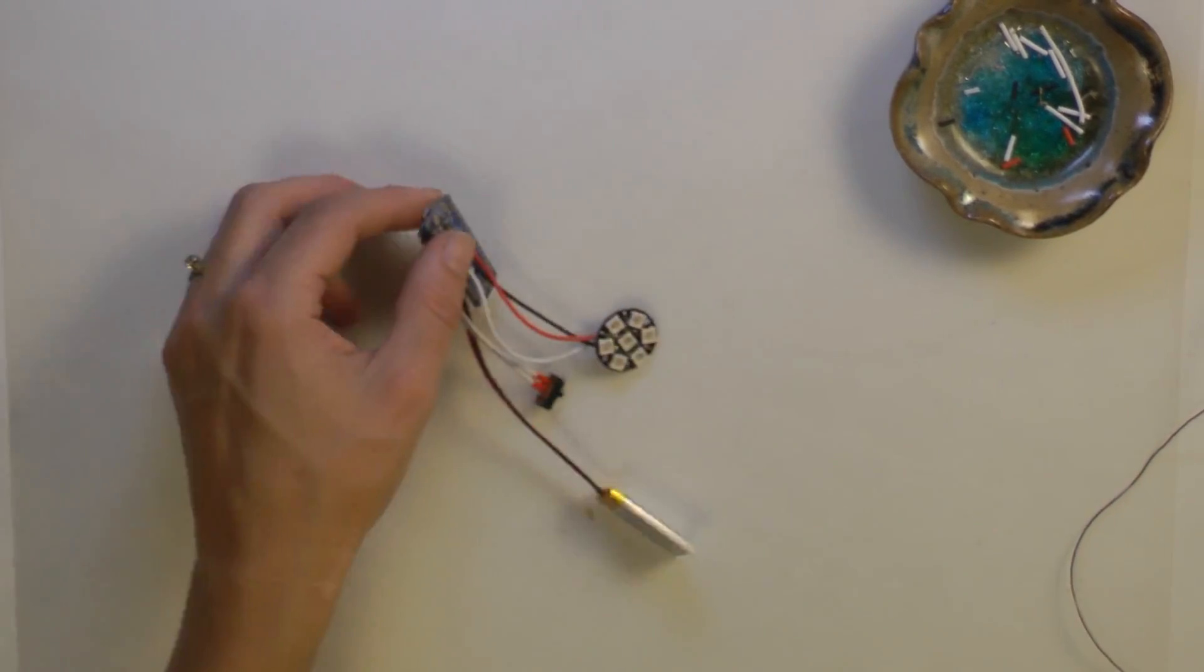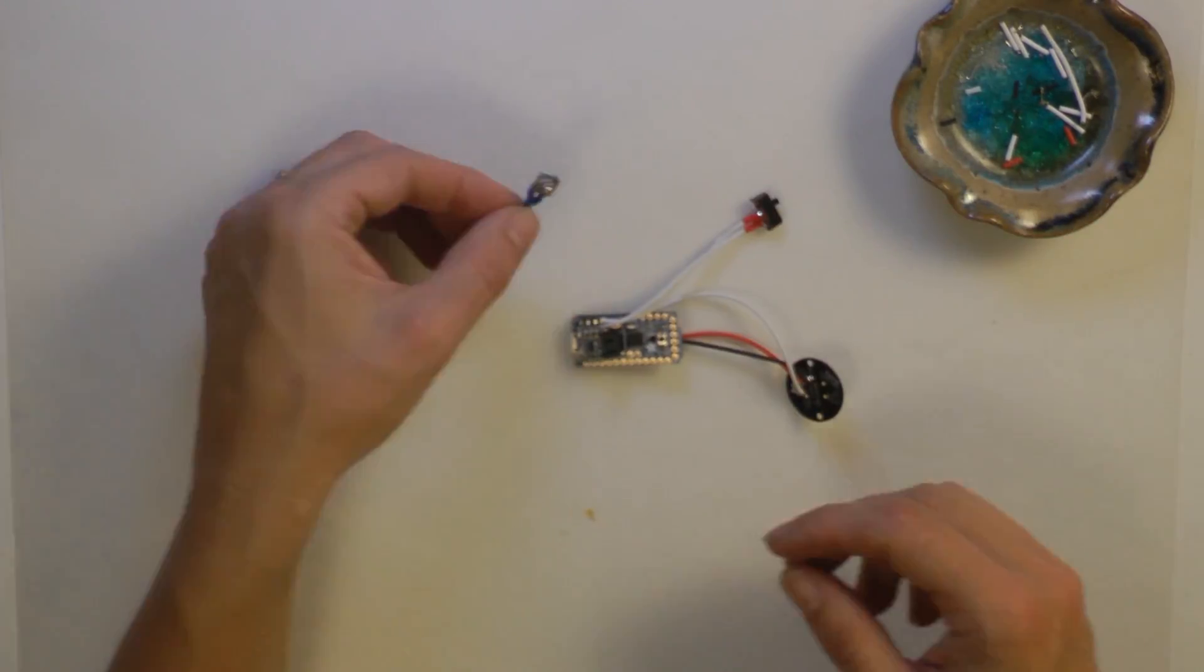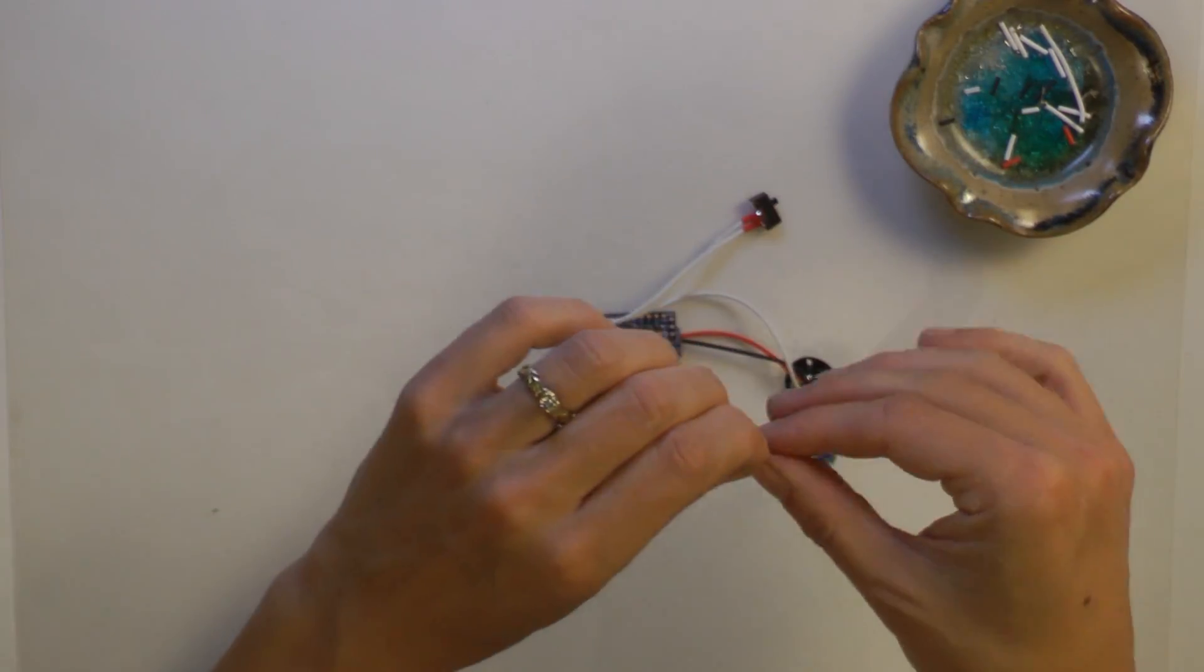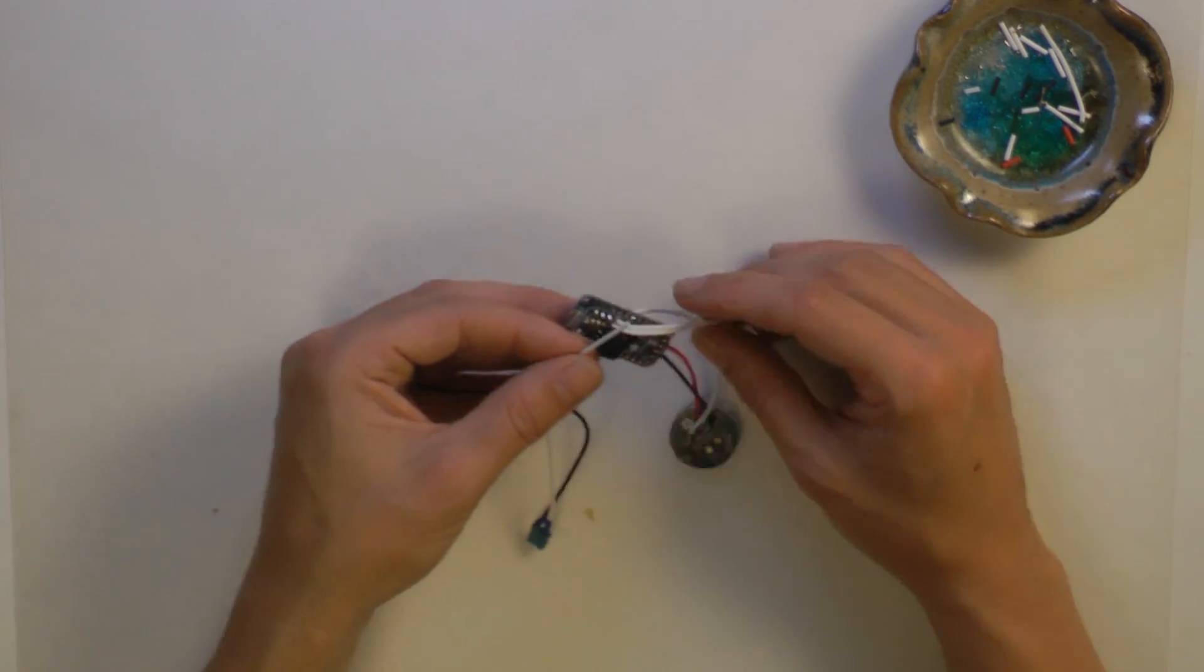Flip the switch and be sure your light comes on. Add your mode changing button by soldering the white wire to pin 3 and the ground wire to the remaining ground pin on the Pro Trinket.